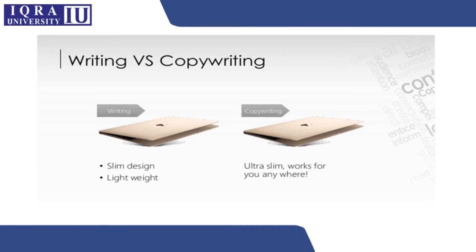Now let's look at the second example. You see a laptop here — you could write an entire list of features about its slim design, lightweight build, storage space, durability, and so on. But from the copywriting perspective, there's just one line: 'Ultra slim, works for you anywhere.' If you're focusing on the USP of this laptop — its lightweight or slim design — you put it in one line, and that explains to your consumer why this laptop is different from any other.